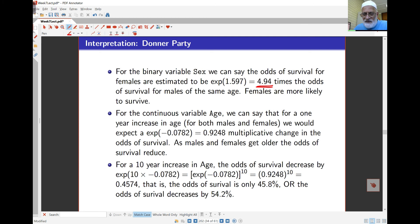If I look at something more reasonable, a 10-year age difference. As age increases by 10 years, I get 10 times that, which is the same as this thing to the power 10. In other words, I've got 0.9248 to the power 10, which means that a person who is 10 years older, their odds of survival is less than half. The odds of survival decreases by 54.2%. Look at this slide carefully to understand how we can interpret these things.